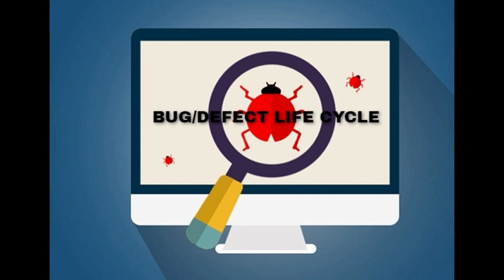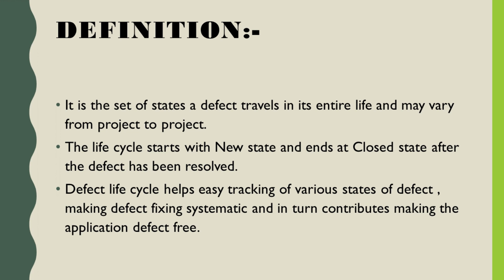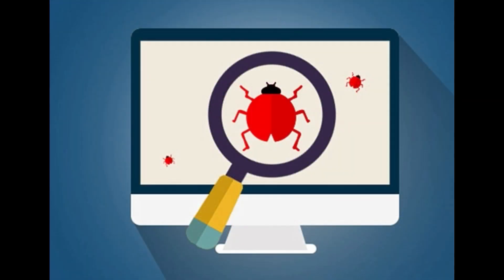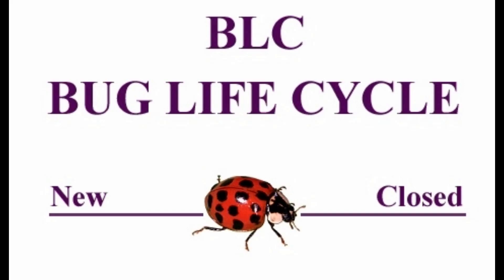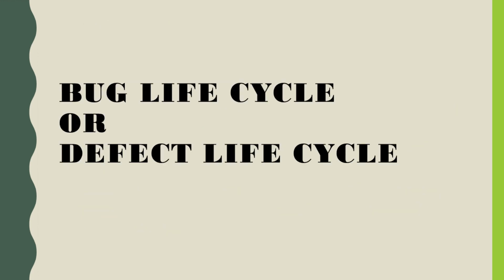No matter what you call it, Bug Life Cycle or Defect Life Cycle both refer to the same topic. It is the set of states a bug travels in its entire life, and states may vary from project to project. The life cycle starts from the new state — from the time the defect has been created in any defect tracking tool such as Jira, Bugzilla, Rally, or any other — after it is identified by the tester, and ends at the closed state. Defect Life Cycle is followed for easy tracking of various states of a defect, making the defect fixing process quite systematic, which in turn contributes to making the application defect free. In this video, I will try to cover all the possible states of a defect irrespective of any project.